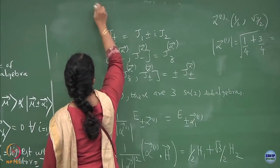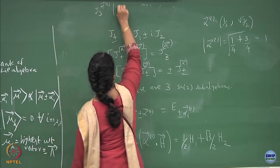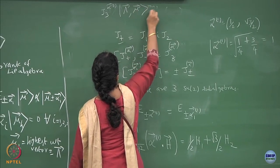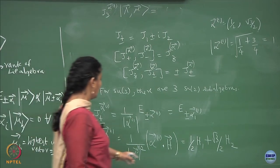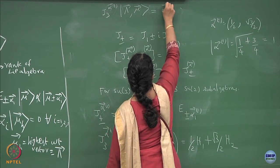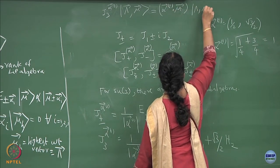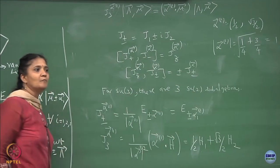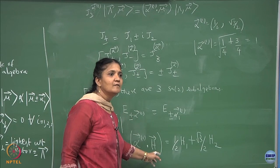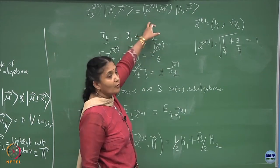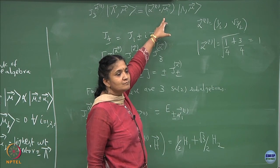What I am trying to say is that if I do J3 acting on alpha1, or let us say lambda and mu vector, it will be a dot product of that weight vector with the mu vector. The J3 alpha1 is this operator, so it will be a dot product of that weight vector with the mu vector.